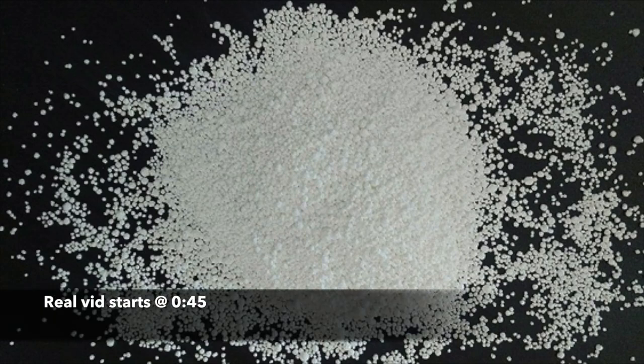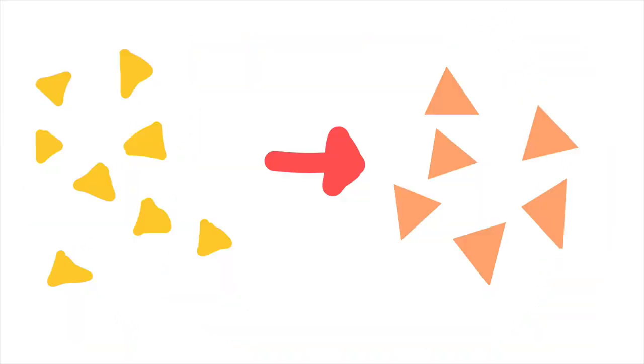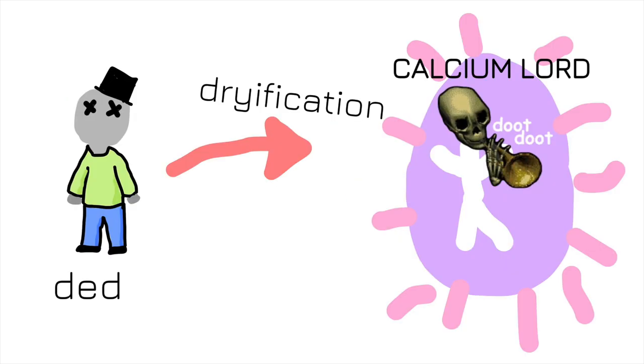Calcium chloride is a salt with an interesting trait of being able to dissolve itself by absorbing water in the air. In other words, it is extremely hygroscopic. It has a variety of uses such as de-icing roads, modifying characteristics of a surprisingly large amount of foods, and most importantly, it can be used as a desiccant, also known as a drying agent.